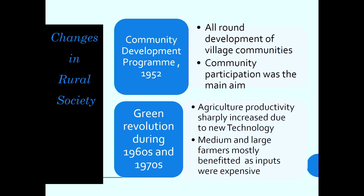There are so many changes happening in rural society because of different government programs. The Community Development Program in 1952 was a major program in which all-round development of village communities took place, with community participation as its main aim. During the 1960s and 1970s, the Green Revolution was introduced, and agricultural productivity increased due to new technology and machinery introduced during that period, resulting in a multifold increase in agricultural productivity.